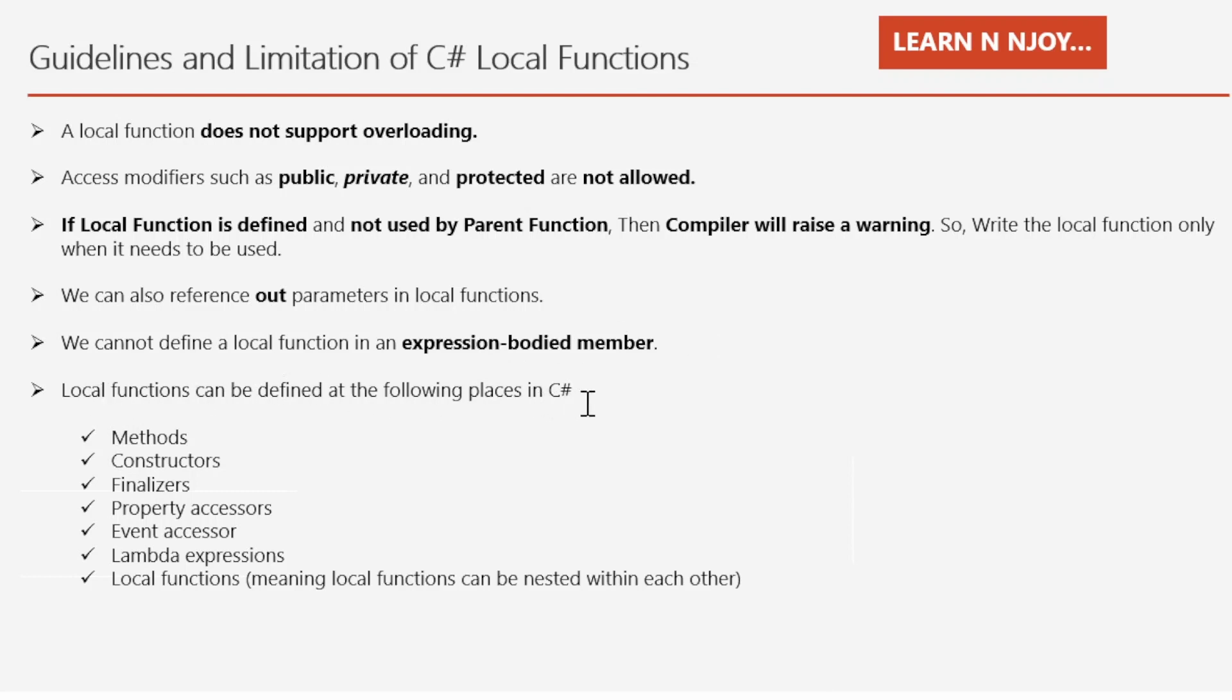Local functions can be defined at the following places in C#: methods, constructors, finalizers, property accessors, event accessors, lambda expressions, and local functions—meaning local functions can be nested within each other.